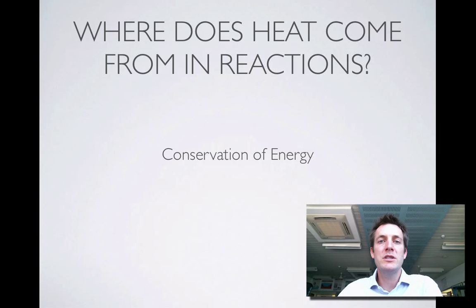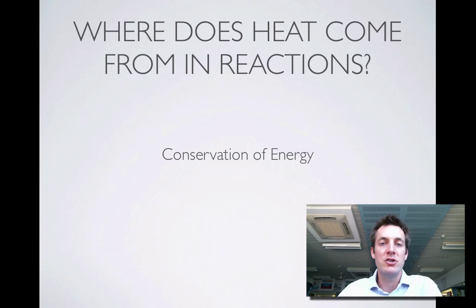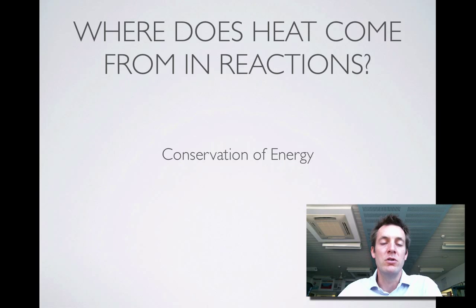As we study energetics, we often look at different chemical reactions with heat changes. So it's important that we ask: where does the heat in chemical reactions actually come from? According to the law of conservation of energy, you can't create energy and you can't destroy it. So if you're releasing heat or absorbing heat in a chemical reaction, that heat must be either being converted from another form of energy, or being converted into another form of energy.